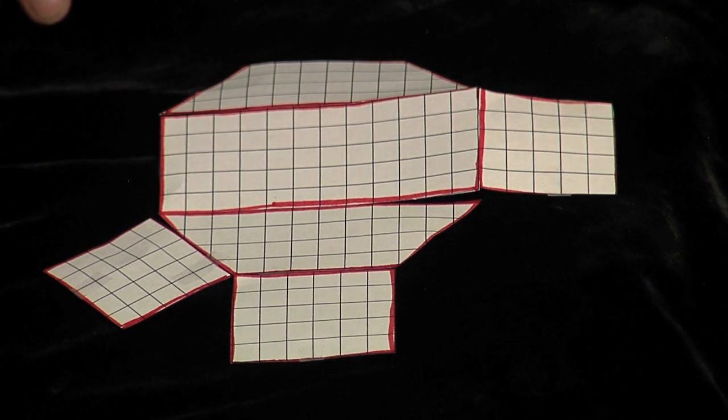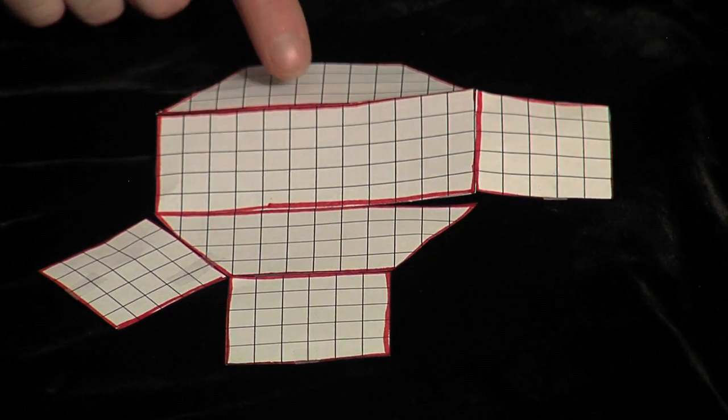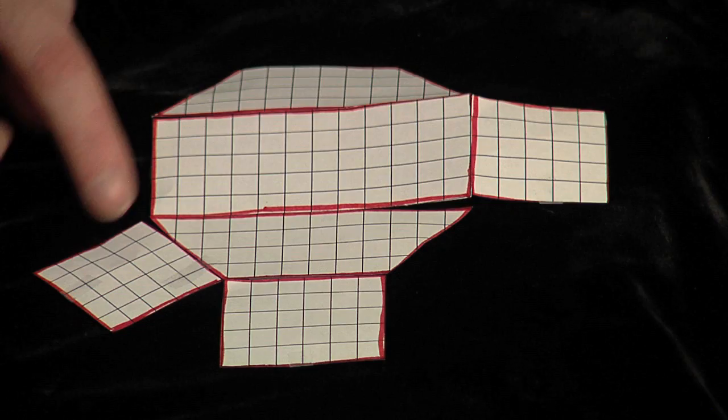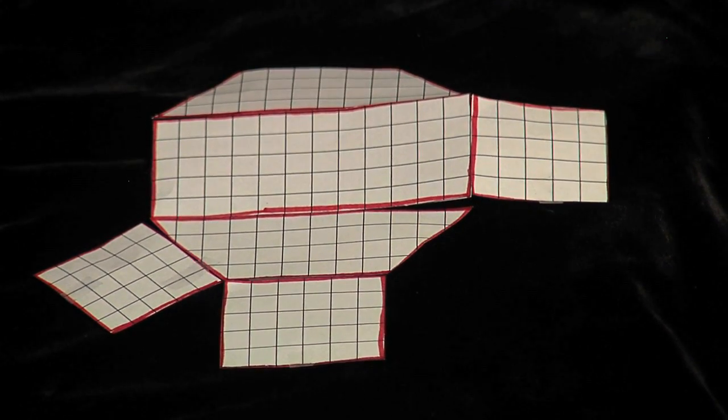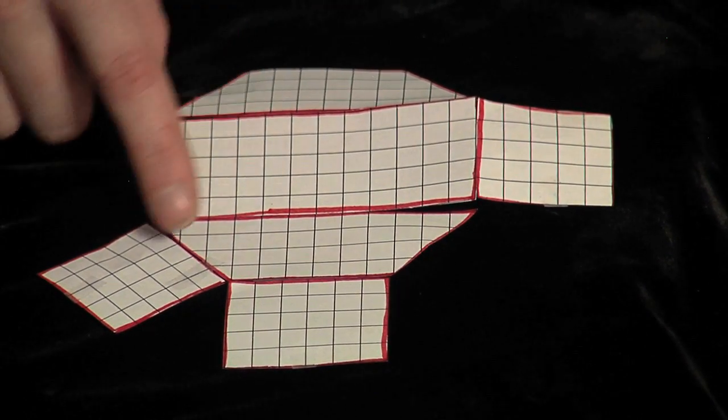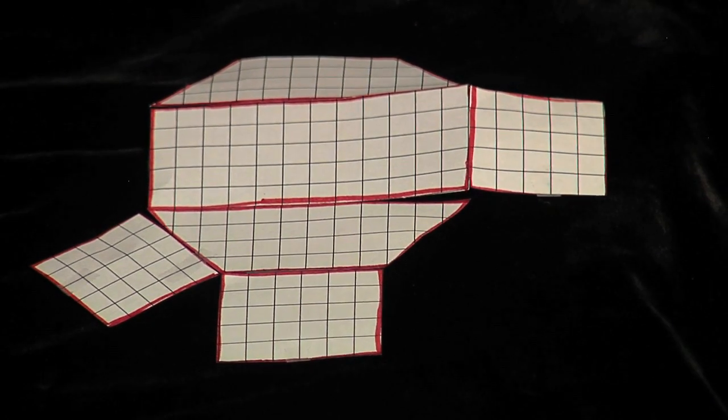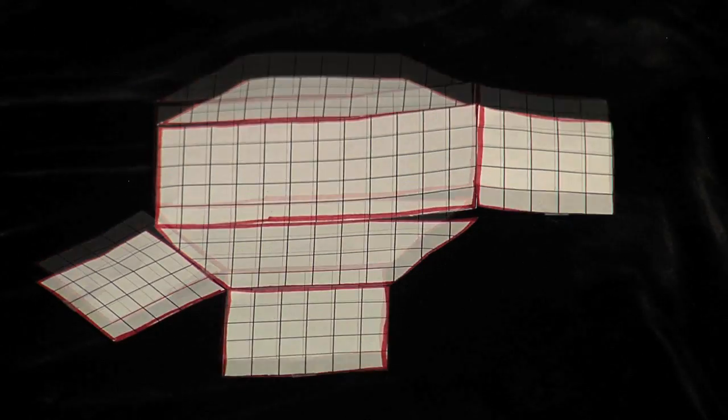As you can see, when we unfolded our 3D figure, we made a net that has two congruent trapezoids and four rectangles. All we have to do is find the area of each face and add them together, and that will be the surface area of a trapezoidal prism.